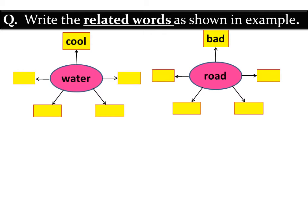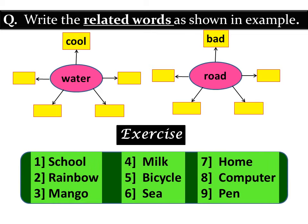Second question: as shown in example, write related words. The water is cool, then write four related words. The road is bad adjective, write related adjectives. This exercise includes: school, rainbow, mango, milk, bicycle, sea, home, computer and pen. These are all nouns. For each, write four related adjectives.